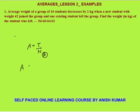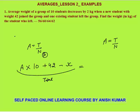So what was the total weight initially? Total weight was a × 10. Now a 42 kg person joins in — let's add his weight — and the person who left, let's say his weight is x kg. So this is the total weight of the new group. This total weight can also be calculated on the right side using a = t/n. The question says the average weight decreases by 2 kg, so earlier the average was a kg and now the average is a minus 2 kg.